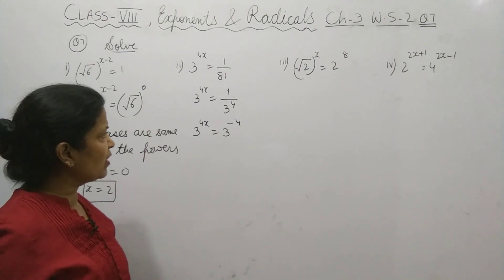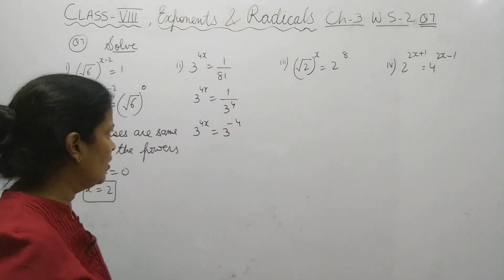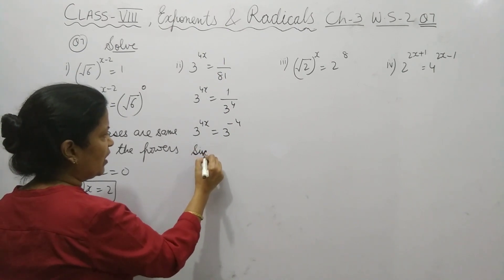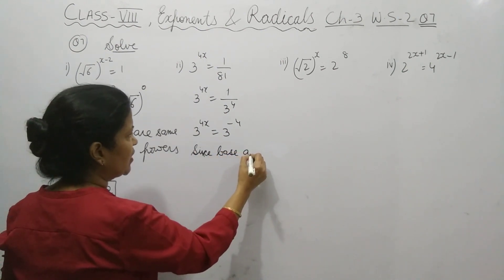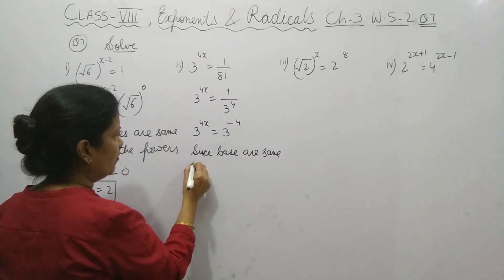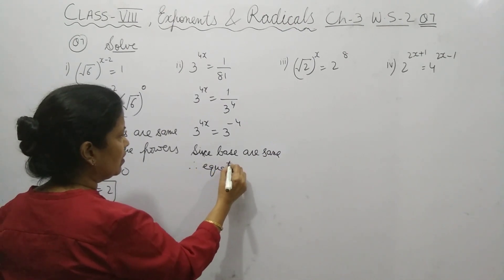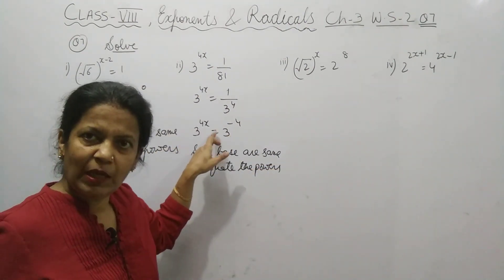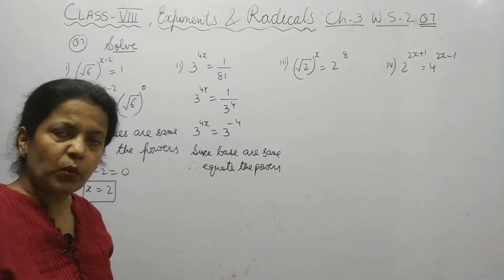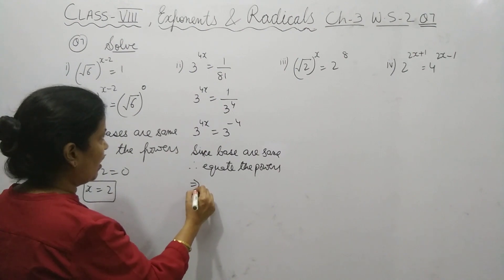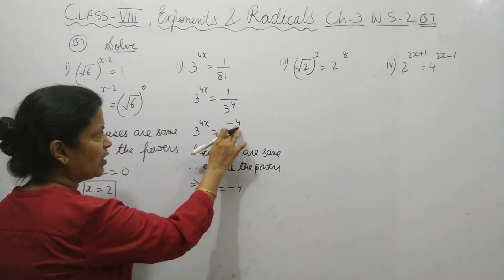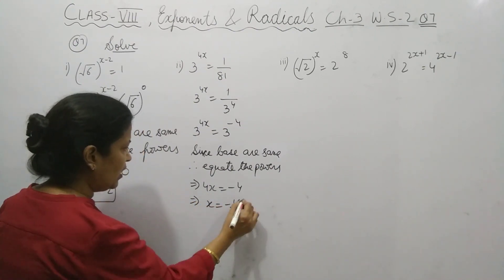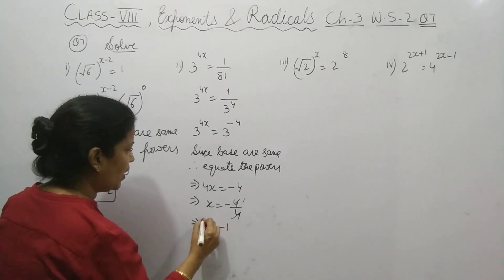Same thing you have to write: since bases are same, therefore equate the powers. Now the bases are same. So it means that 4x equals minus 4. So x will be minus 4 by 4. Cancel it. You will get x value as minus 1.